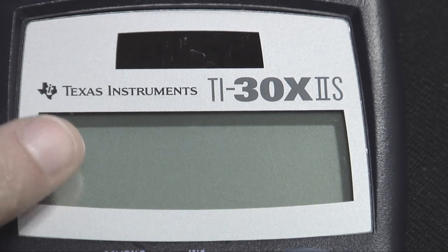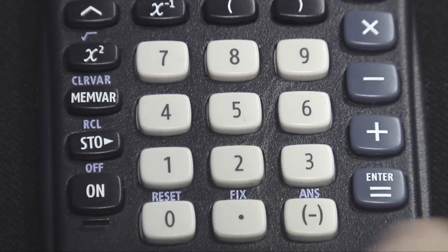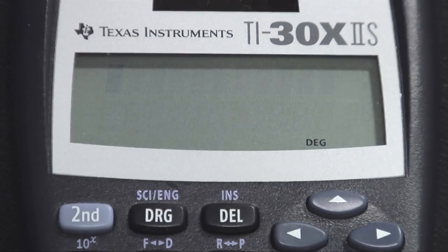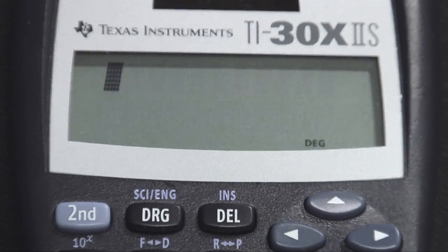My calculator is off, so the first thing I need to do is turn it on. When I turn this calculator on, you notice it only says DEG. I need it in statistics mode.